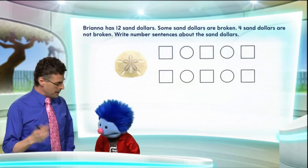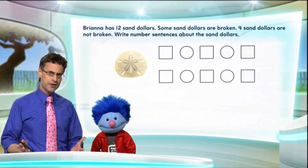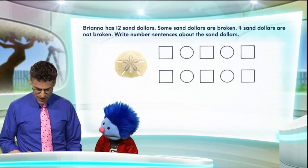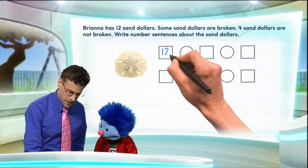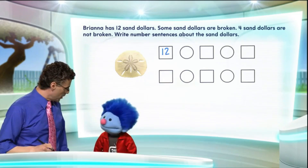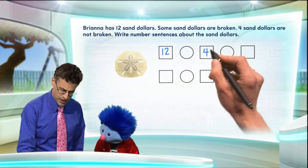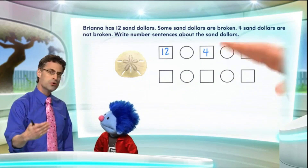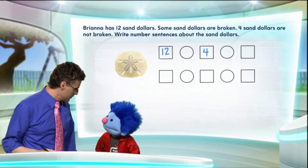Okay, well, let's write some number sentences about sand dollars. So let's think about it. We have 12 all together, and we know some are broken and some are not broken. So if we want to think about how to write a number sentence, we could say, well, we have 12 all together, and we know that four are not broken, so the rest would be the broken ones. So I could write that four here. I'm going to take 12 and remove the four sand dollars that are not broken, and the rest will be the ones that are broken.